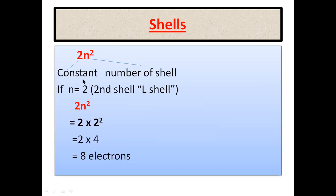Similarly, for the second shell we use the formula 2n². We want to calculate the maximum number of electrons in the second shell, the L shell. Again 2n²: 2 multiplied by n, where n equals 2, so 2² equals 4, and 4 multiplied by 2 equals 8 electrons. So the second shell will have a maximum of 8 electrons.